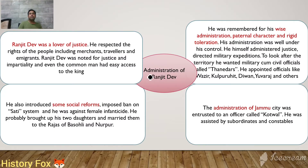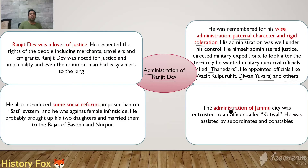Now let us discuss the administration of Ranjit Dev. He was remembered for his wise administration, paternal character and religious toleration. His administration was well under his control. He himself administered justice and directly led military expeditions to look after the territory. He appointed military-cum-civil officials known as thanedars, and various officials like Vazir, Diwan, Yuvraj and others. The administration of Jammu city was entrusted to an officer known as the Kotwal, supported by subordinates and constables.